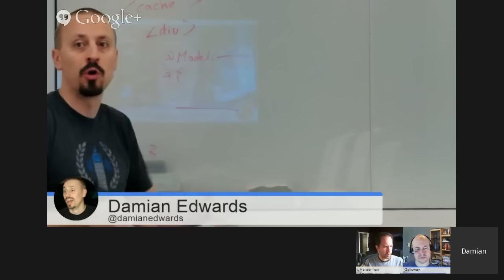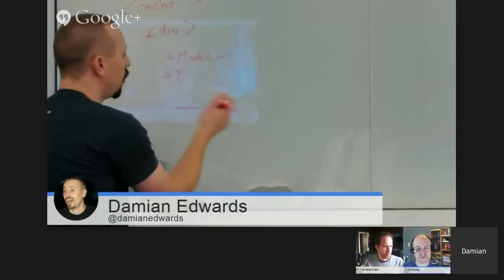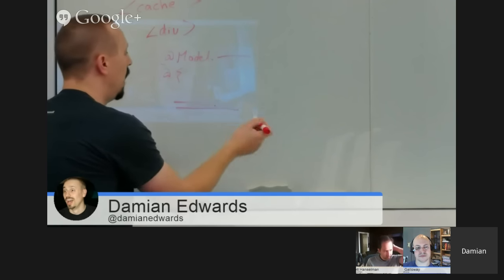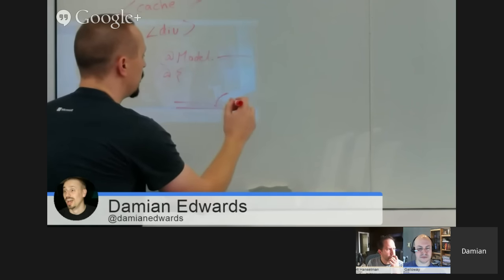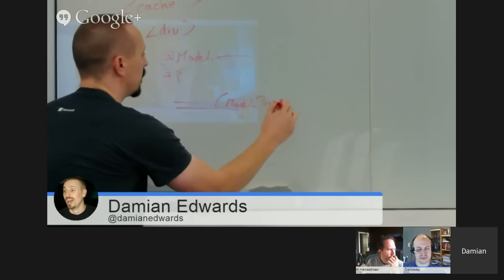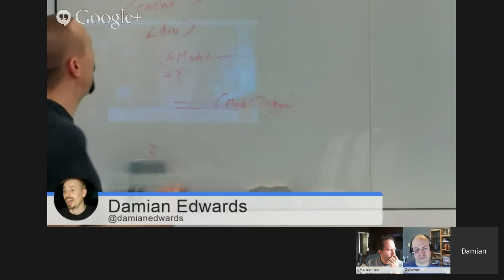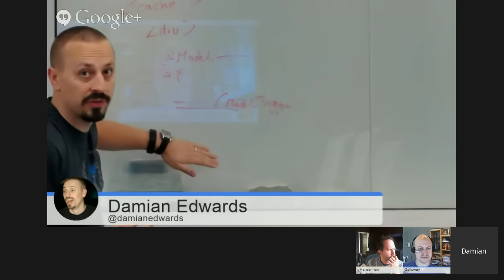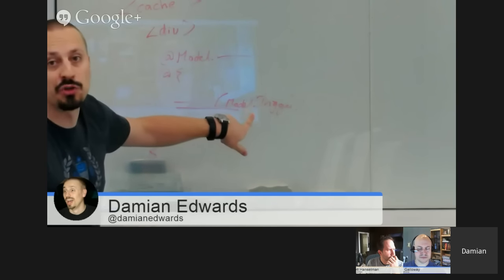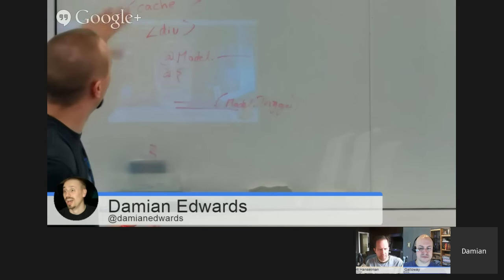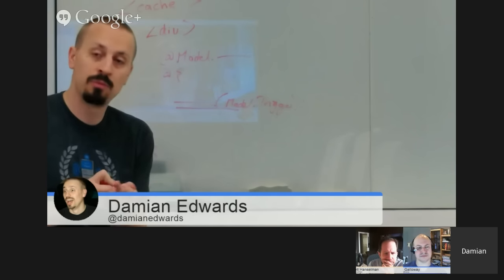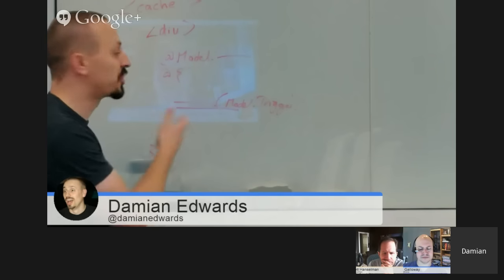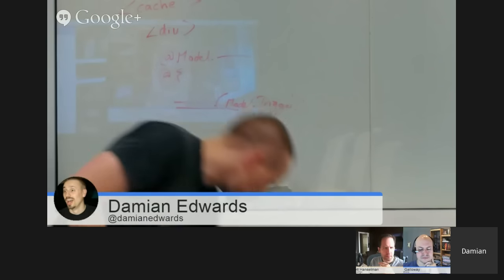Say your model was populated from the database and you want to invalidate this cached fragment when that database record changes. Your controller could put not only the data on the model but also a cache invalidation trigger linked to what built the model. Inside the cache tag helper block you call the API to add that trigger, and when the trigger fires the cache entry is invalidated and the block runs again.